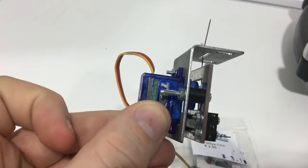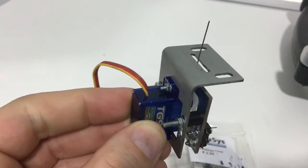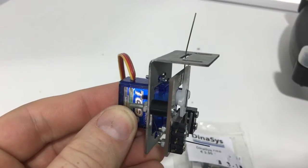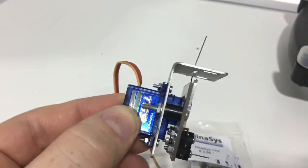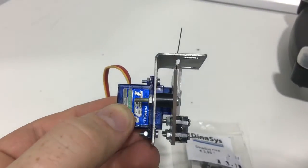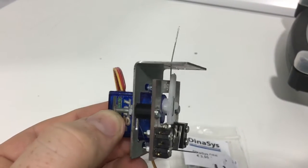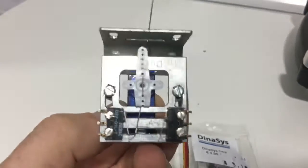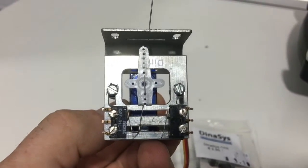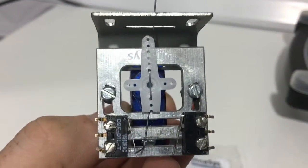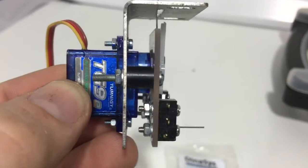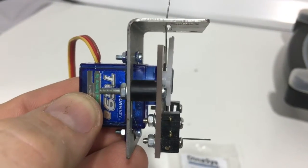The nine gram servo has two screws which hold that with the washers, and that's the servo connected to the bracket.